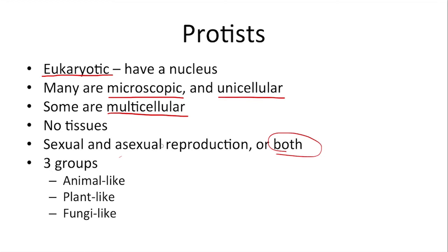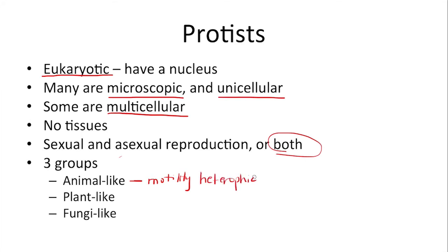It's a very diverse group, but I want us to focus on basically three main groups or three main divisions within the protists group. The first are what we would call the animal-like protists. These are not animals, but they have characteristics so that we call them animal-like. For example, they have motility — they can move around — and they're heterotrophic, so they have to get their energy from ingesting other organisms.